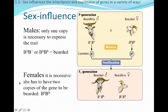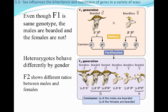For females, this trait is going to be recessive. So in order for a female to express the phenotype of having a beard, she actually has to be homozygous recessive — having the B-little-b genotype in both alleles. Keep in mind that even though the F1 individuals share the same heterozygous genotype, the males are going to be bearded but the females are not.